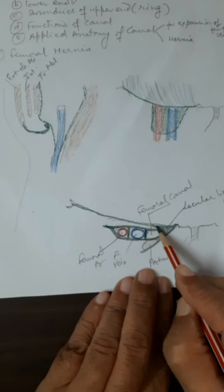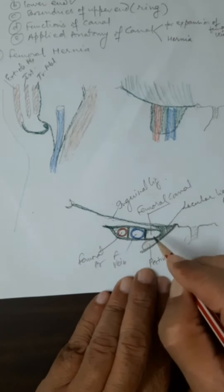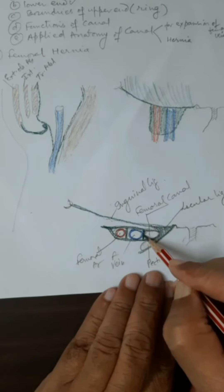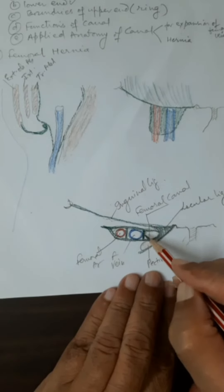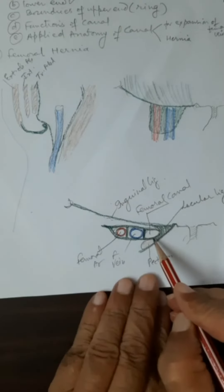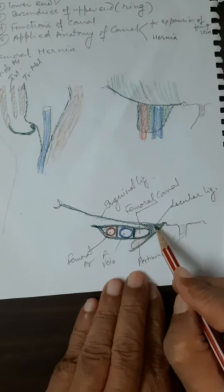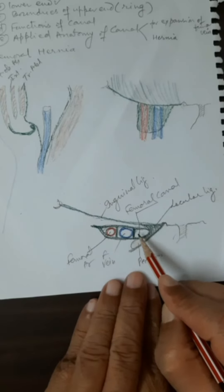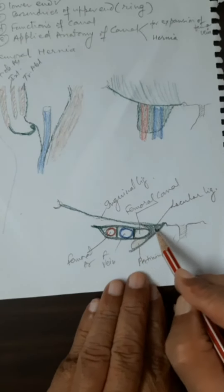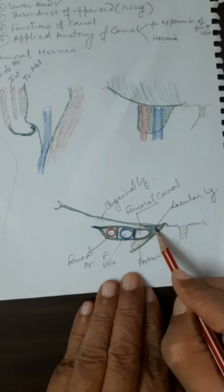The femoral ring boundaries are: anteriorly by the inguinal ligament, laterally by the femoral vein, medially by the lacunar ligament, and posteriorly by the fascia covering the pectineus muscle. These boundaries define a very small canal of hardly one centimeter, yet sometimes contents may come out through it and give rise to femoral hernia.